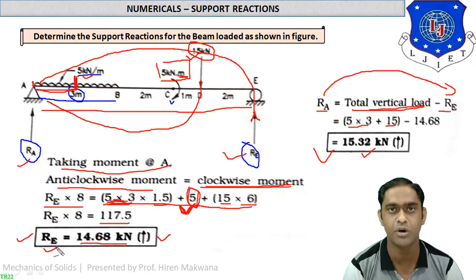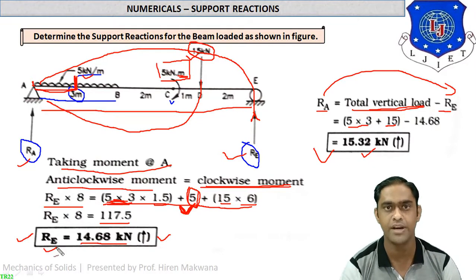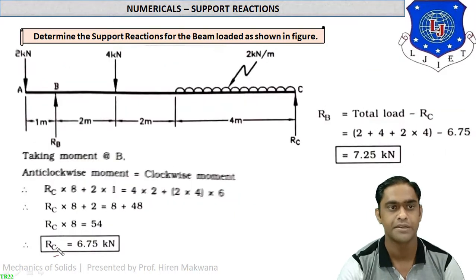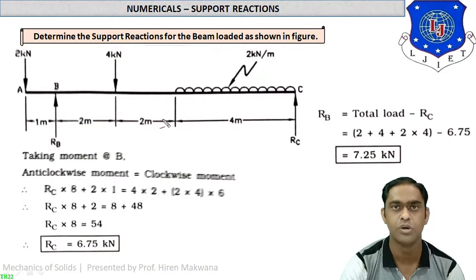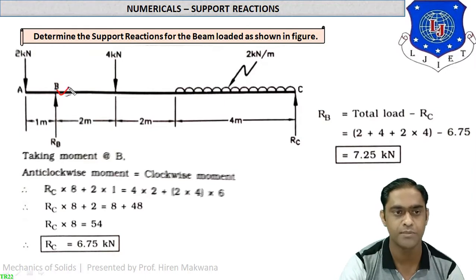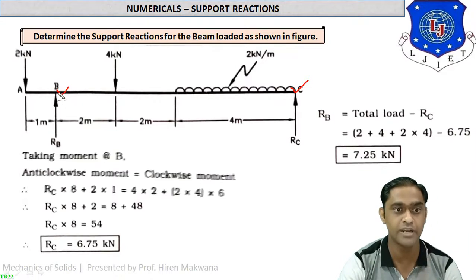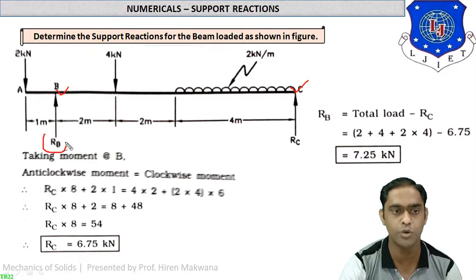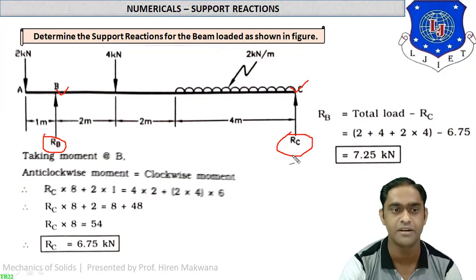This example was straightforward because no inclined forces were present. Moving to the next example: again, no horizontal or inclined forces are present, so only two vertical reactions apply. This beam is an overhanging beam — the supports are at points B and C, but the beam extends beyond B to point A. So two support reactions are RB and RC.